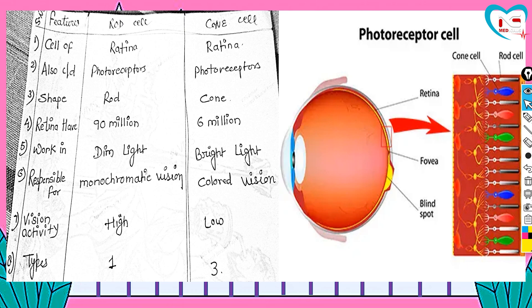We will study rods and cones in more detail, which is very important because these cells complete the neural layer. Both rods and cones are part of the retina, formed by the pigmented layer and neural layer together. These cells act as photoreceptors — we also call them photoreceptors.